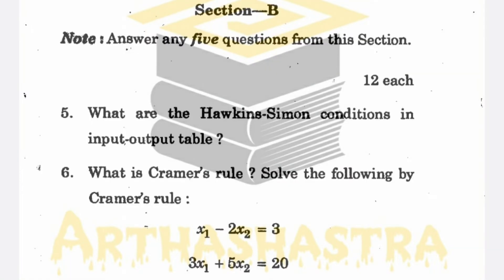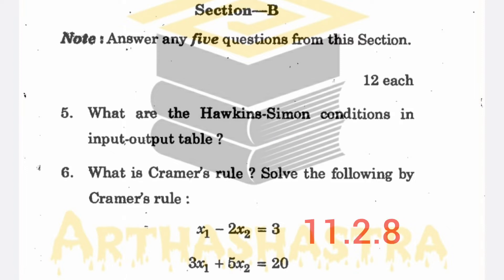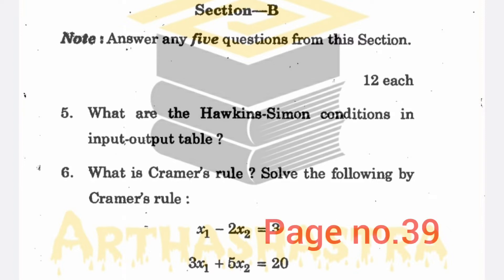Coming to Section B. Question number 5 is from Block 4, Unit 12, section 12.5.2. Question 6 is from Block 4, Unit 11, section 11.2.8 — it's a solved question given in the book itself. Refer page number 39 for its solution.